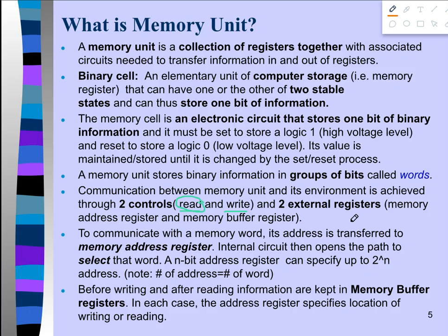There are two external registers in a memory unit. One is known as the Memory Address Register (MAR) and another is known as the Memory Buffer Register (MBR). The Memory Address Register is used to identify the location of data or to transfer data from one location to another. The Memory Buffer Register is used to store data before the read or write operation — information is kept in the memory buffer register before writing and after reading.